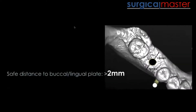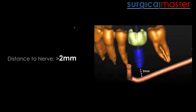From a buccal-lingual direction, you'd like to have at least two millimeters to the buccal plate. Does that always happen? We don't always have the luxury, so sometimes we need to adjust the implant position and plan on preventative grafting. You have a lot of leeway in the virtual world — I just wanted to give you the guidelines.